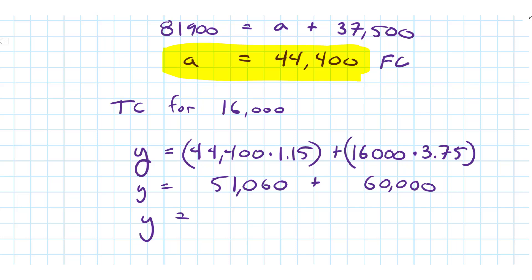So the total cost for 16,000 units will be one hundred and eleven thousand sixty dollars.